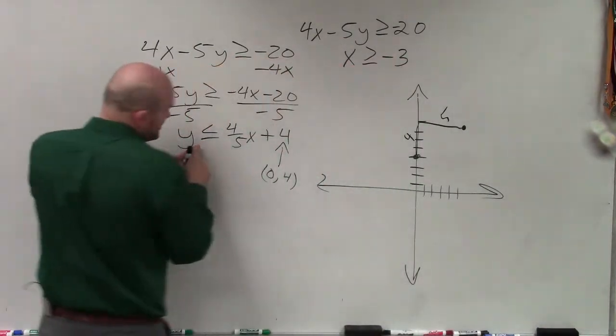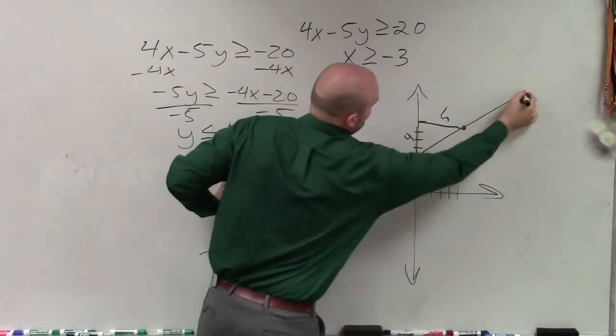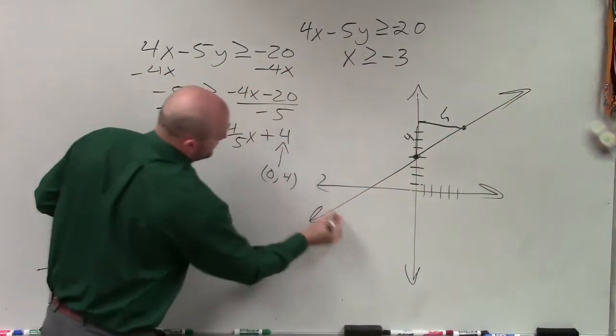Then I look at this. This is less than or equal to, so it's going to be a solid line.